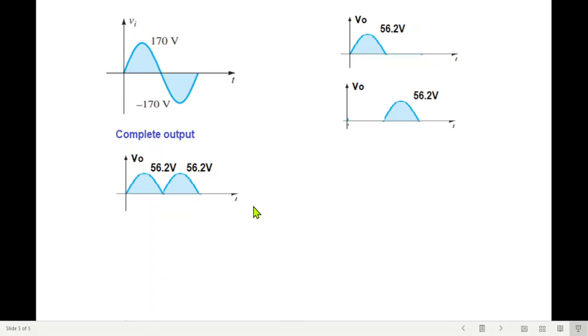So this is part one answer. Now another part of the question says find the DC value. So we'll use this formula. VDC is 2V maximum divided by pi. Now V maximum is 56.2. So solving VDC is 35.78V. So I hope you have been able to follow this. Thank you.